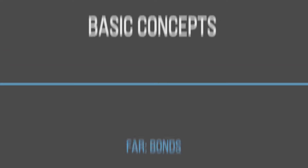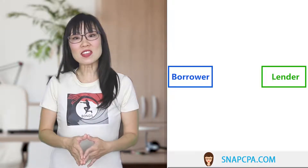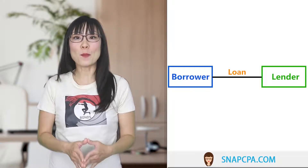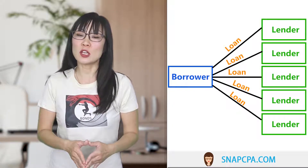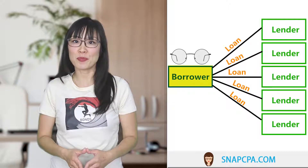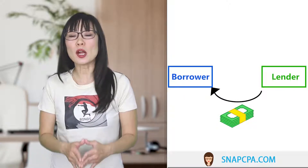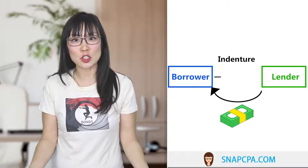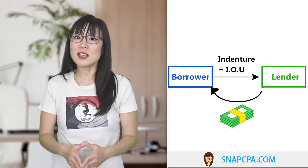What are bonds? Not fans — bonds are actually just loans. Rather than getting one big loan from the bank, a borrower gets lots of little loans from people and other companies. In this video series we'll primarily be focusing on bonds from the viewpoint of the borrower. When people and companies lend money to the borrower, the borrower issues a bond indenture to each lender. The indenture is just a written IOU.